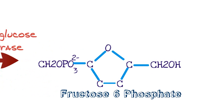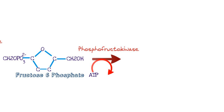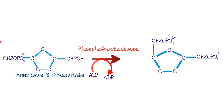The next step is really important. We go from fructose-6-phosphate to our second energy-requiring step, and our enzyme here is phosphofructokinase. Again, kinase — so we know there's a movement of a phosphate group. Phosphofructokinase acts on fructose-6-phosphate: ATP comes in, donates a phosphate group, becomes ADP, and also donates energy. This phosphate is added to the first carbon. So you have a fructose molecule with a phosphate at the first carbon and a phosphate at the sixth carbon — this is called fructose-1,6-bisphosphate.